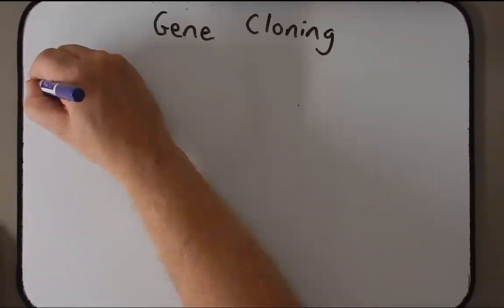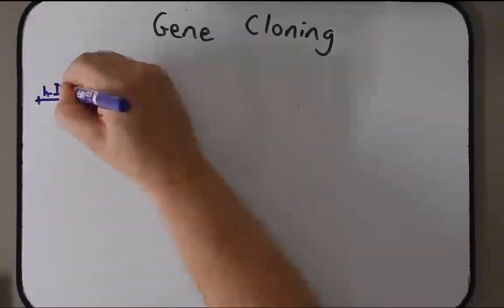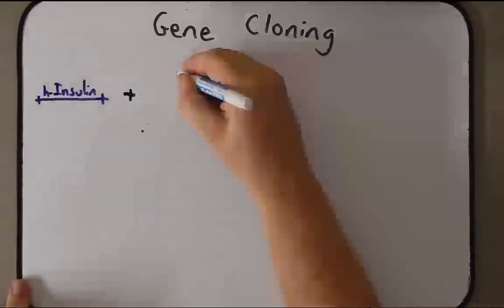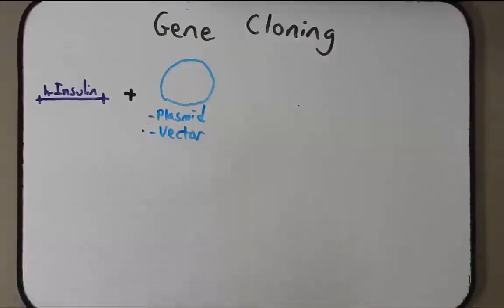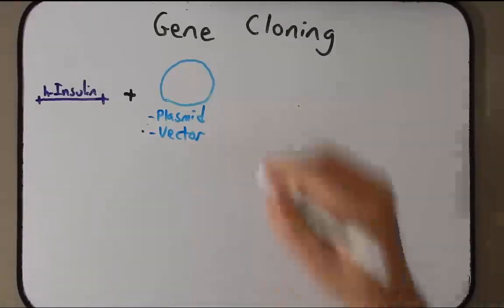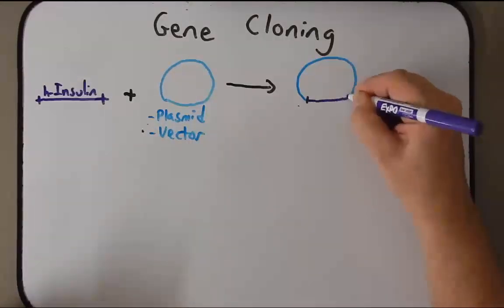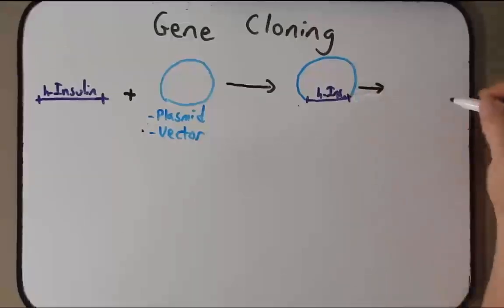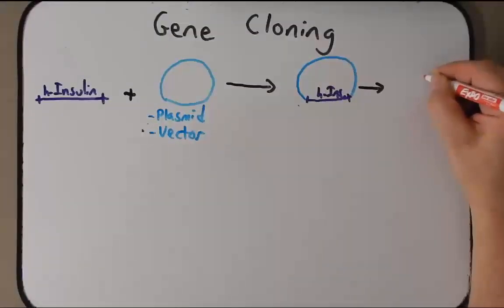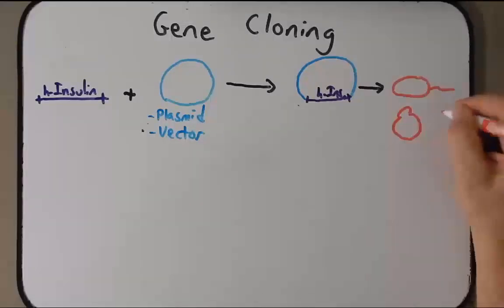With gene cloning, what we're going to do is take the human insulin gene and combine it with a bacterioplasmid — also called a vector, or plasmid vector; we'll use those terms interchangeably. By combining these together in a special way, we'll have this vector with the insulin gene inside it, and then we'll place this vector with human insulin into a bacterial cell, a yeast cell, or some other kind of cell.